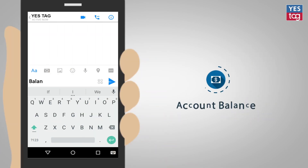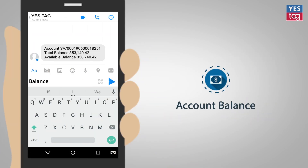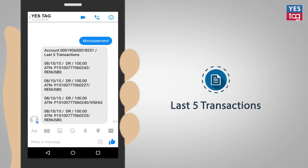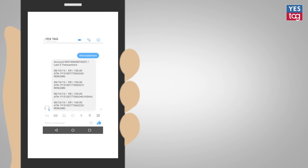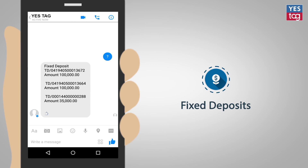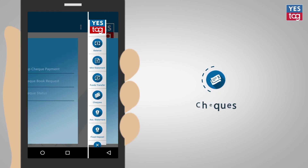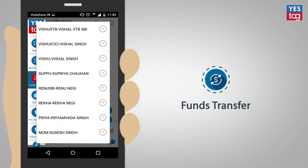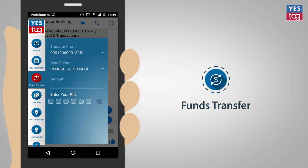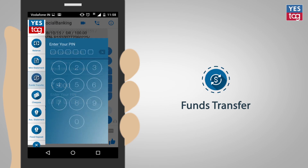Now it's simpler to know your account balance, last five transactions in the account, fixed deposit details linked to the account, to request for stop check, and a checkbook.